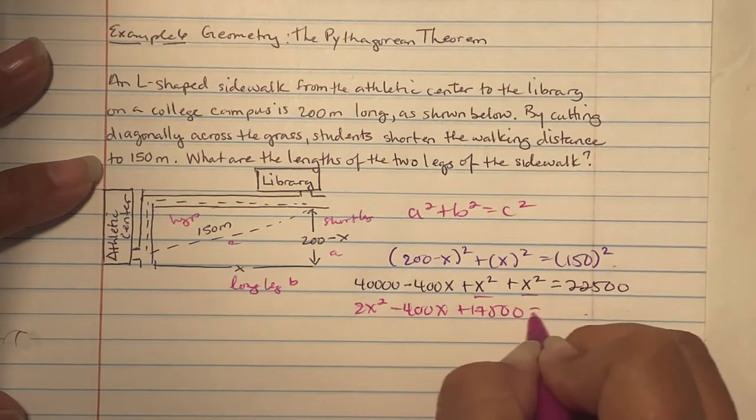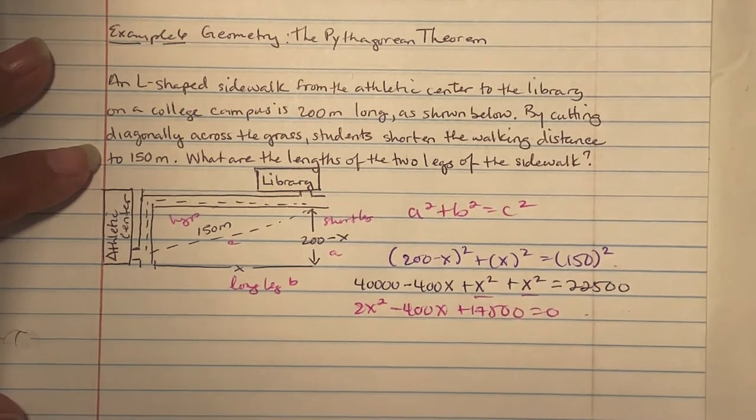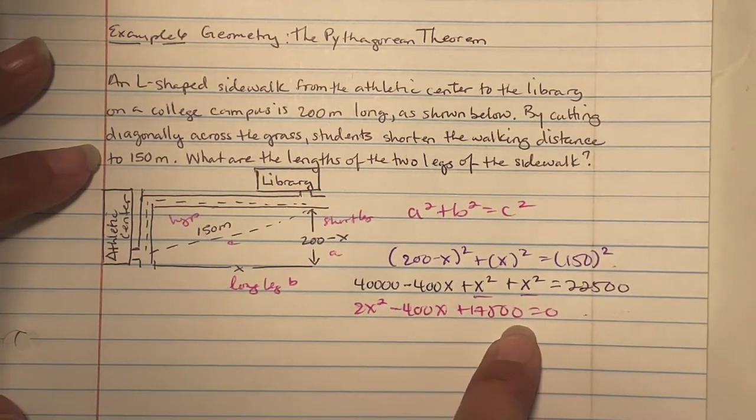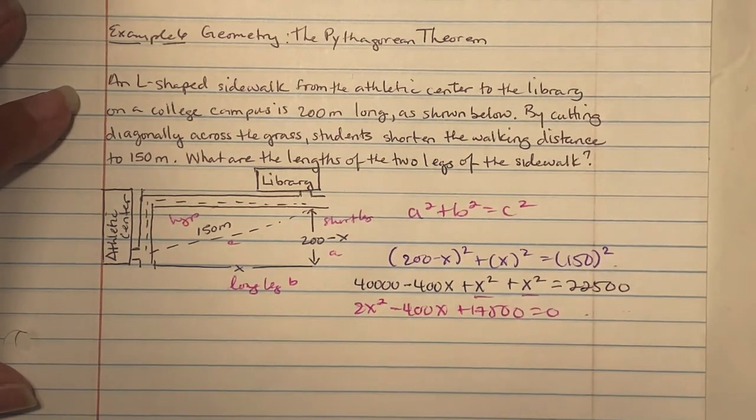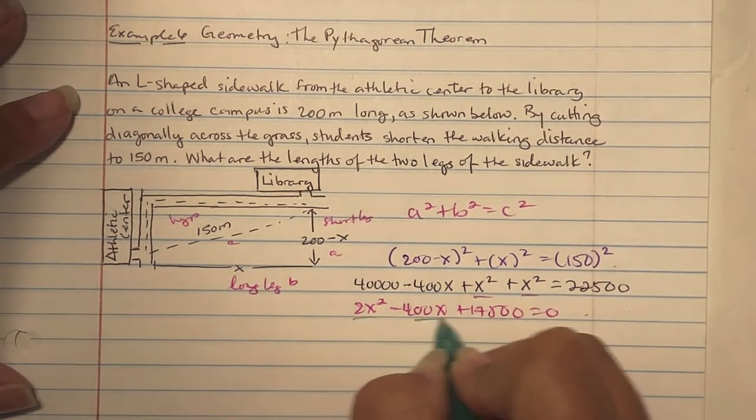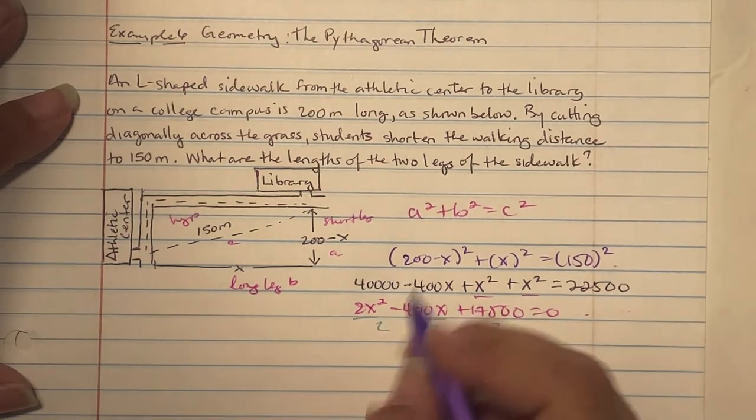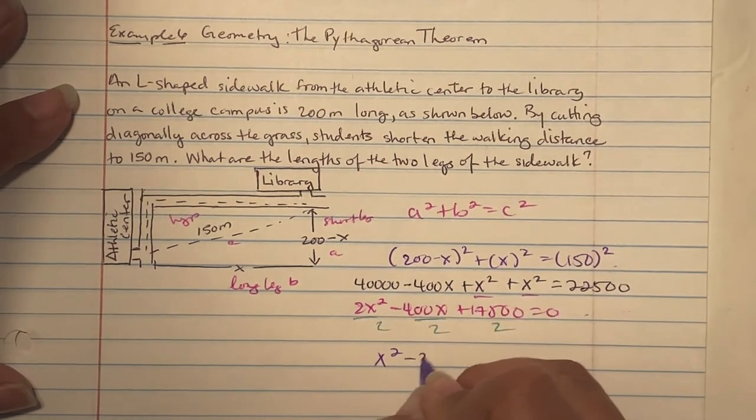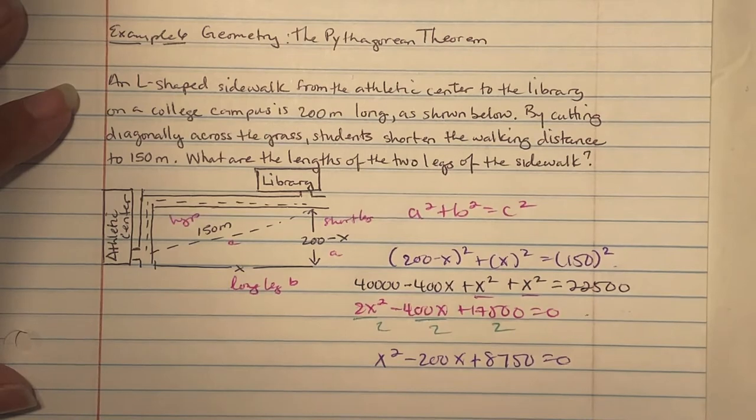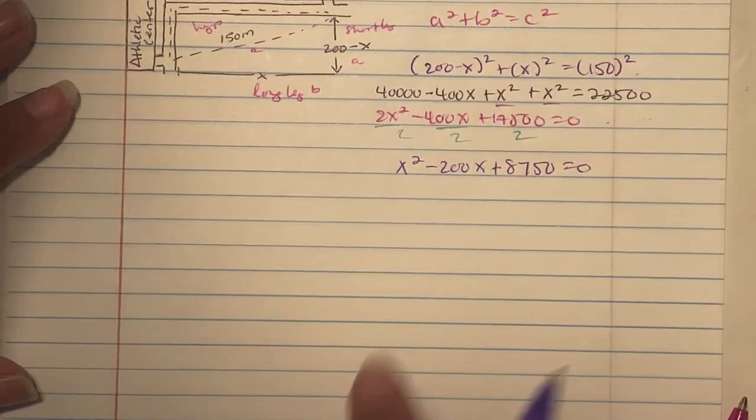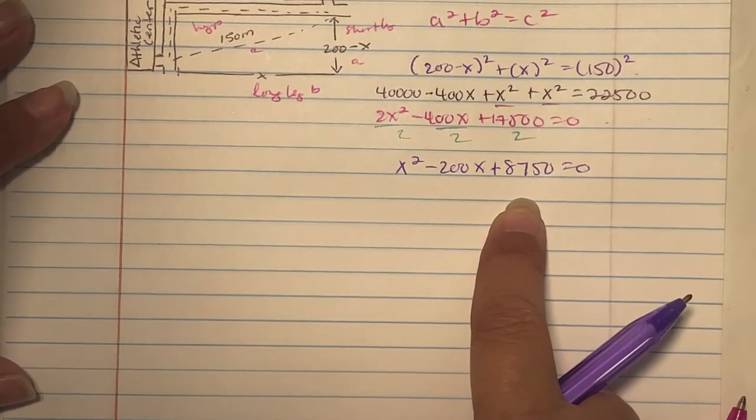Those combine to become 2X squared minus 400X, and I'm subtracting here, so we get positive 17,500 equals zero. Next, since the last digit ends in zero, it's divisible by an even number. Divide everything by two to get smaller numbers. We get X squared minus 200X plus 8750 equal to zero. Now I'm not going to have you try to factor this out. We're going to use quadratic formula.